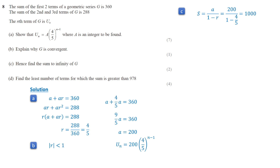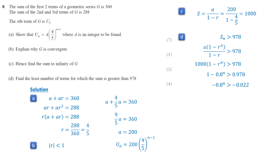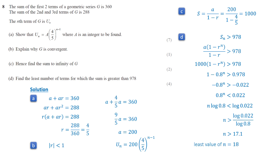In part D, we have to find the least value of n for which the sum to n terms is greater than 978. The formula is a times (1 minus r to the n) divided by (1 minus r). We know that a over (1 minus r) is 1000. Dividing both sides of the inequality by 1000 and subtracting 1, we get negative 0.8 to the n is greater than negative 0.022. Multiplying by negative 1 flips the inequality. Taking logarithm of both sides, n times log 0.8 is less than log 0.022. Since log 0.8 is negative, dividing both sides by this value flips the inequality again. We get n is greater than 17.1, so since n must be an integer, the least value of n is 18.